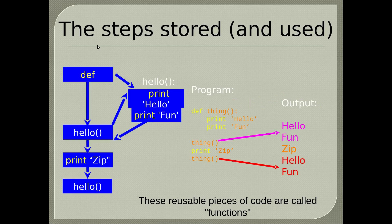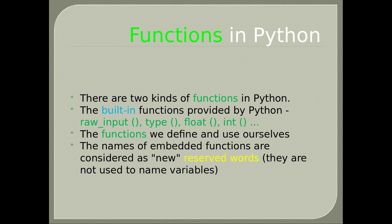Functions, arguments, parameters. We define a program by defining the module/function 'thing' that prints 'hello' and 'fun'. When we call it, it will print the two words. There are two kinds of functions in Python: the built-in functions provided by Python (raw_input, type, float, int, etc.) and the functions we define and use ourselves. The names of built-in functions are considered reserved words and are not used to name variables.